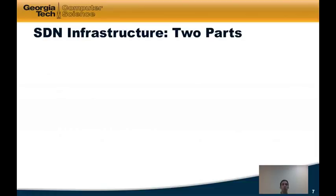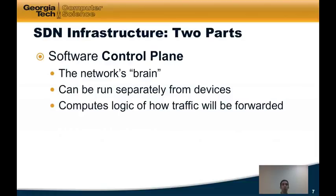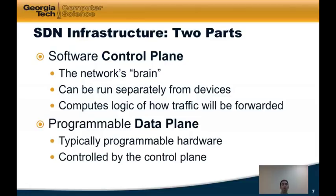SDN infrastructure has two parts. The first is the control plane — that's the network's brain, essentially what is controlling the behavior of the network. The control plane can be run separately from the underlying network devices — the routers and switches that actually do the forwarding — and it computes the logic of how traffic is going to be forwarded according to higher-level policies. The second part is the data plane: typically programmable hardware that's controlled by the control plane.